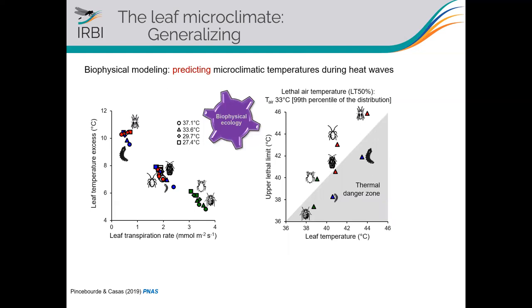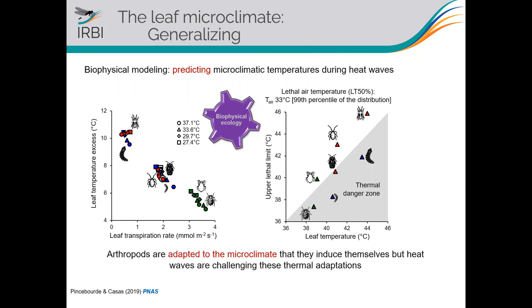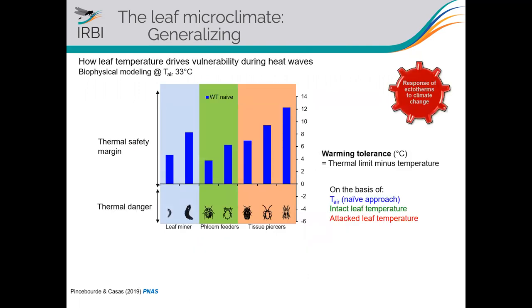The modeling approach also allowed us to derive a community-level lethal air temperature: the air temperature that would induce sufficient local macroclimate warming to cause 50% mortality across species in the community. We found this community lethal air temperature is as low as 33°C — a temperature reached quite frequently in our area of France. This modeling was developed under the most extreme conditions, considering leaves under full sun.